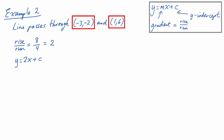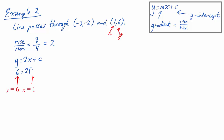We can actually choose either of these points and substitute it into the rule. Let's choose the second one because it might be a bit easier with positive values of x equals 1 and y equals 6. Substituting them in, we get 6 equals 2 times 1 plus c. That tells us 6 equals 2 plus c, so taking away 2, 4 equals c. So the rule is y equals 2x plus 4.